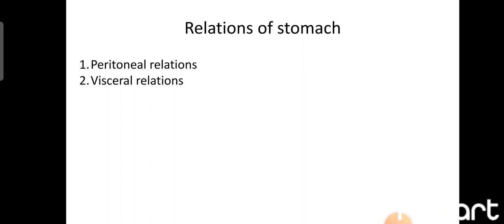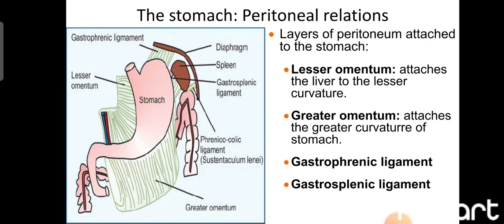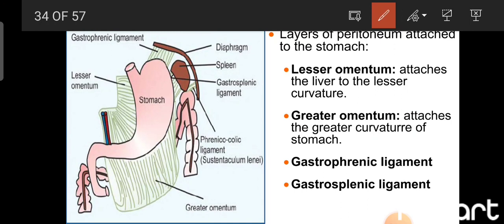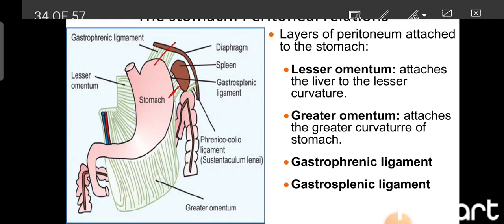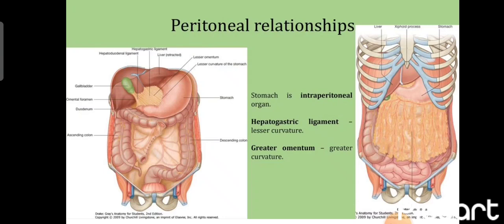The peritoneal relations of the stomach: the lesser omentum is attached at the lesser curvature and connects the liver with the stomach. The greater omentum attaches at the greater curvature. The gastrophrenic ligament connects the stomach with the diaphragm, and the gastrosplenic ligament connects the stomach with the spleen.